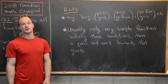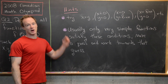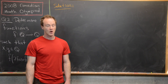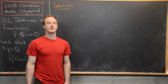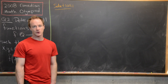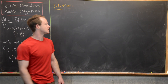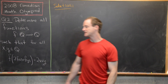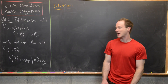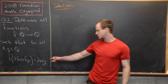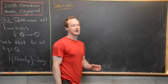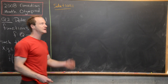I urge you to pause the video, try this problem with these hints, and then we'll look at a solution. Hopefully you were able to make good headway on the problem. Now let's go ahead and look at a full solution. We're going to use that first hint — pick some special values of x and y which will create a simpler functional equation — and we're going to do this a few different times.